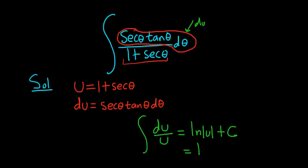But u is 1 plus secant. So this is ln, absolute value, 1 plus secant theta, absolute value, plus our constant of integration capital C. And that's the final answer.